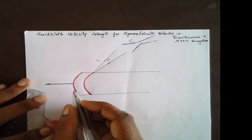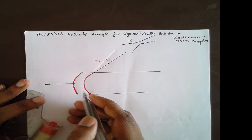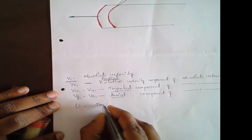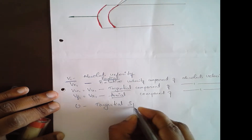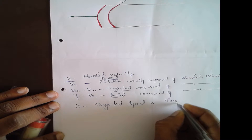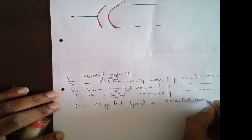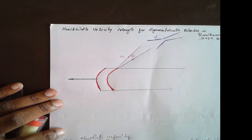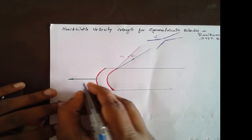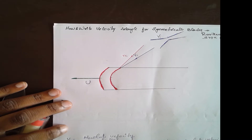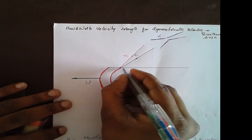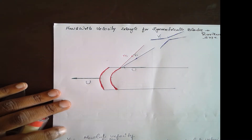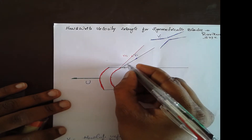Before that, we need to know the direction of tangential speed u. u is the tangential speed or tangential velocity, and it is always moving from right to left. We mark u here, then draw a parallel line from the other end — this is also u.